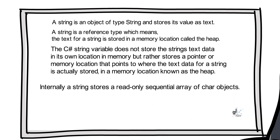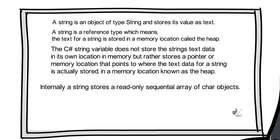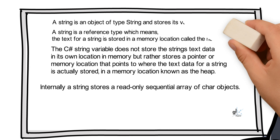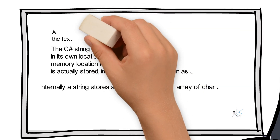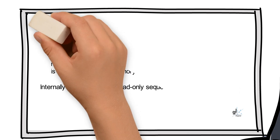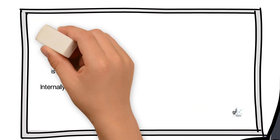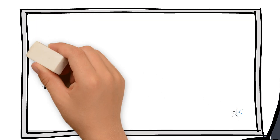The char object supports Unicode character encodings — values that represent characters. Unicode is a standard used for the consistent representation of text for most of the world's writing systems.